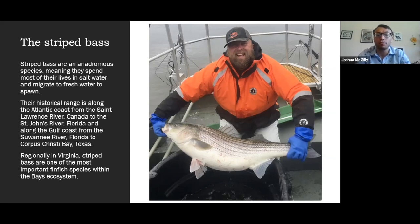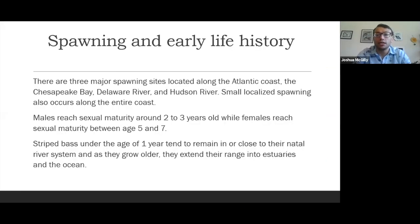Regionally in Virginia, striped bass are one of the most important finfish species within the bay's ecosystem. There are three main spawning sites located along the Atlantic coast: the Chesapeake Bay, which is comprised of a number of different tributaries, the Delaware River, and the Hudson River. Small localized spawning also occurs along the entire Atlantic coast. Males reach sexual maturity at around two to three years, while females reach it between five and seven. Before or up to the age of one year old, striped bass tend not to leave their natal rivers.